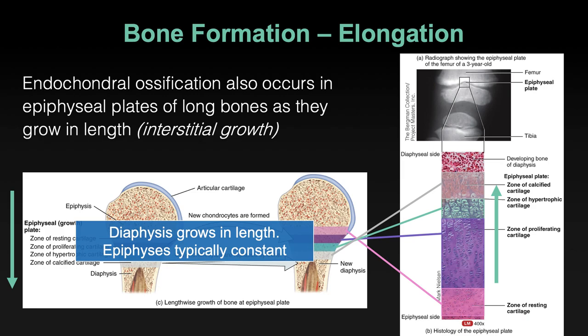This will continue until you turn 18 to 21 years old, at which point you won't have the proliferation and growth of chondrocytes. They will fuse in a calcified matrix and become a noteworthy line — you'll see that in lab.